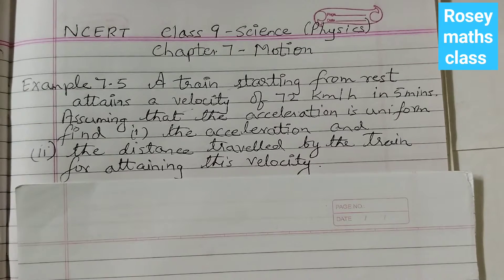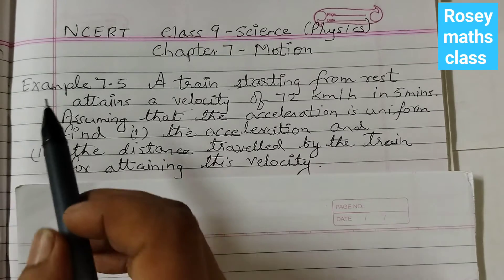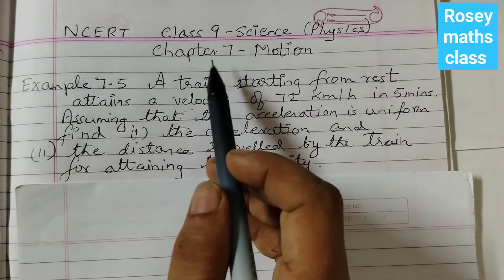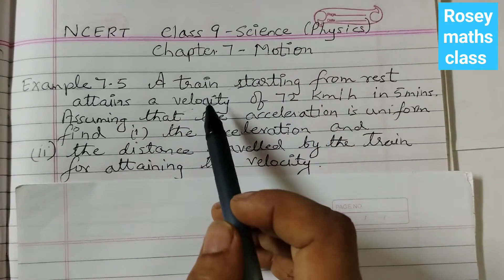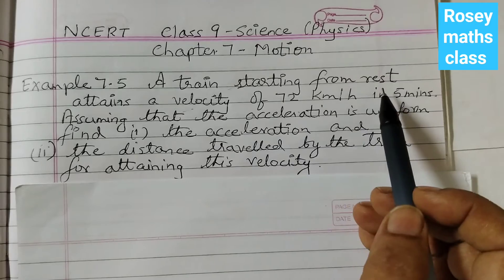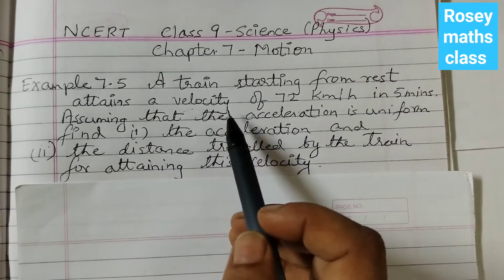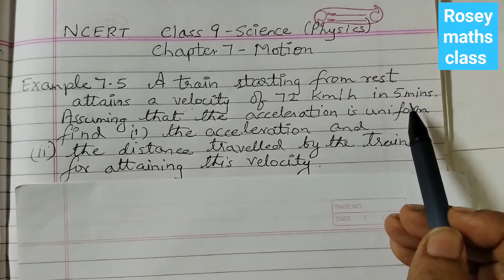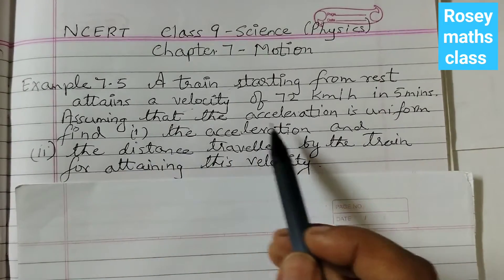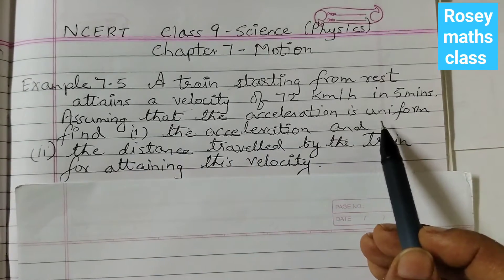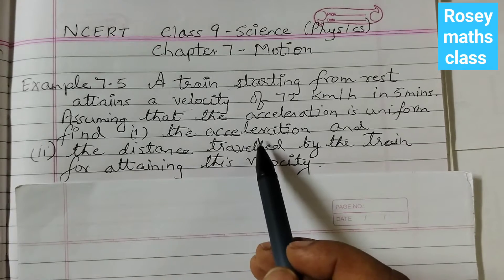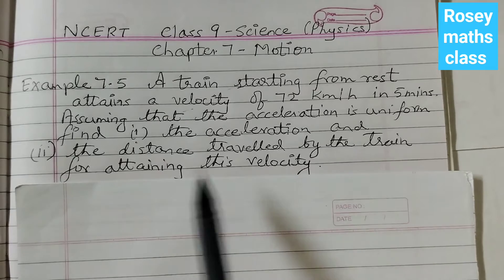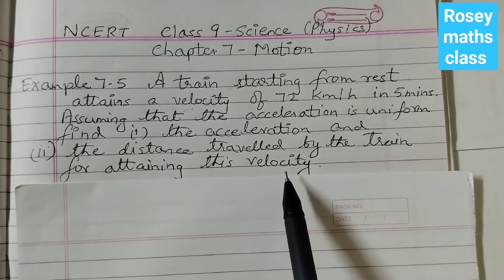Hello students, in this video we shall discuss example number 7.5, that's Class 9 Science Chapter 7 Motion. A train starting from rest attains a velocity of 72 km per hour in 5 minutes. Assuming that the acceleration is uniform, find the acceleration and the distance traveled by the train for attaining this velocity.